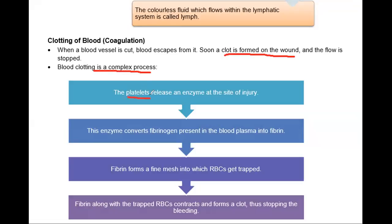Our platelets are present in the blood. Platelets secrete enzymes at the site of a clot. When blood is released from a wound, the platelets secrete enzymes. That enzyme converts fibrinogen into fibrin. Fibrinogen is an inactive compound and fibrin is an active compound.